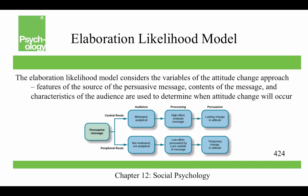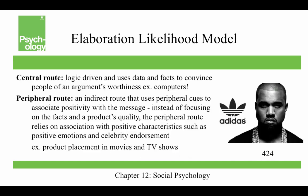The elaboration likelihood model considers the variables of the attitude change approach — features of the source, content of the message, and characteristics of the audience — to determine when attitude change will occur. There are two main routes for delivering a persuasive message: the central route and the peripheral route. The central route is logic-driven and uses data and facts to convince people of an argument's worthiness — like choosing a computer based on processor speed or screen size. The peripheral route is an indirect route that uses peripheral cues to associate positivity with the message, relying on positive emotions and celebrity endorsements rather than facts and product quality.